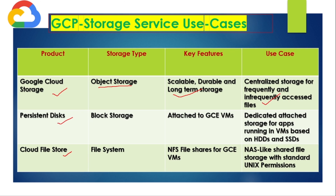Persistent disk is a block storage system used by attaching it to GCE or GKE VMs, providing dedicated storage for a particular VM based on HDD or SSD. Cloud Filestore is a file system storage type used wherever there is a requirement for NAS-like shared file storage with standard Unix permissions — particularly for legacy applications migrating to cloud. With that we conclude session three. Please subscribe to the channel and thanks for watching.